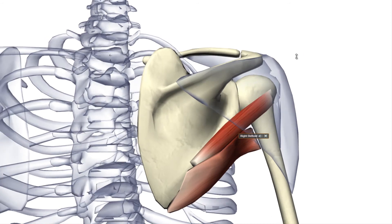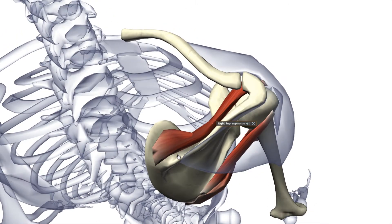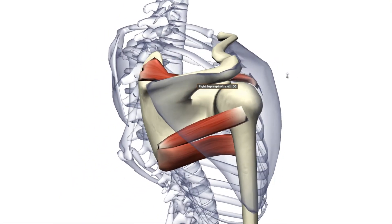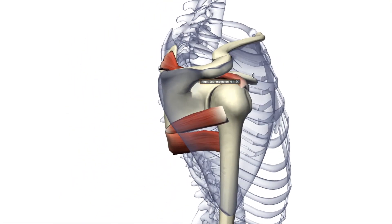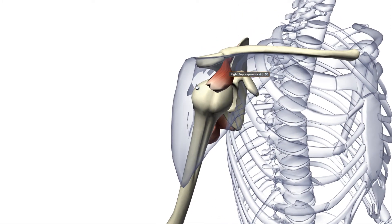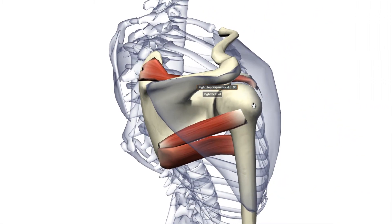Another muscle in the rotator cuff is the supraspinatus — named so because it is above the spine. Its origin is the supraspinous fossa. The insertion is the superior facet of the greater tubercle of the humerus. The humerus has two tubercles: the greater and the lesser. This muscle inserts on the greater tubercle. It is innervated by the suprascapular nerve and serves for abduction of the arm and stabilization of the humerus.